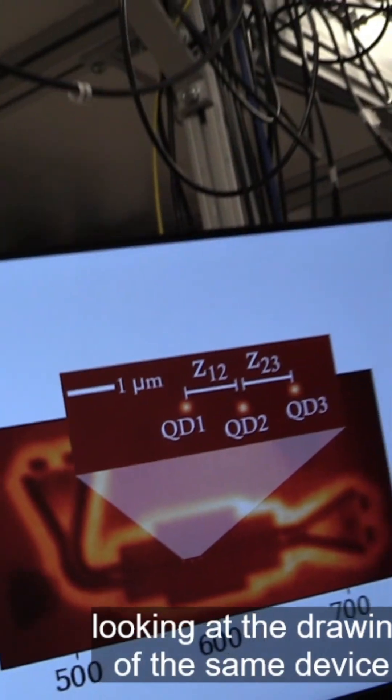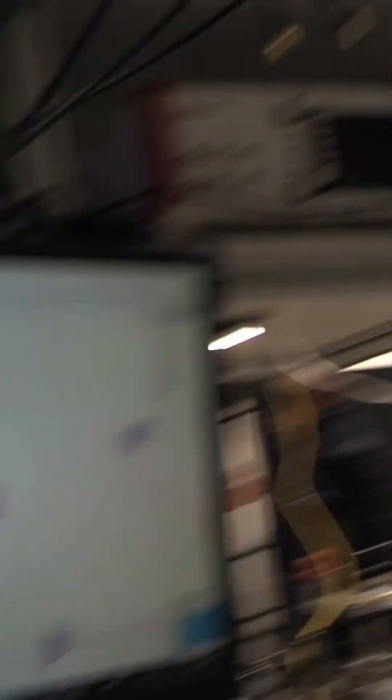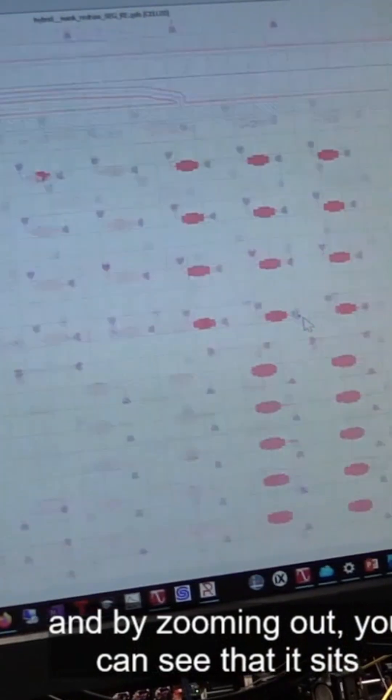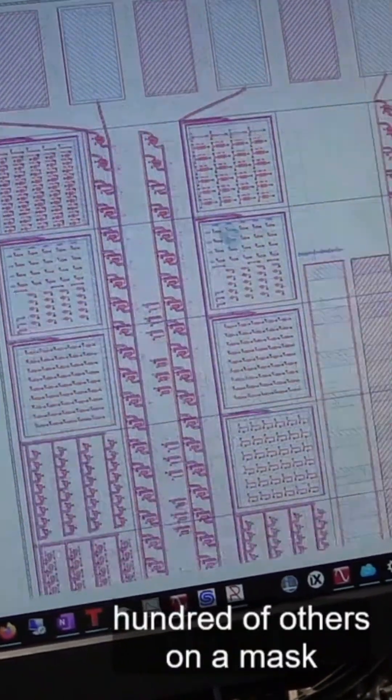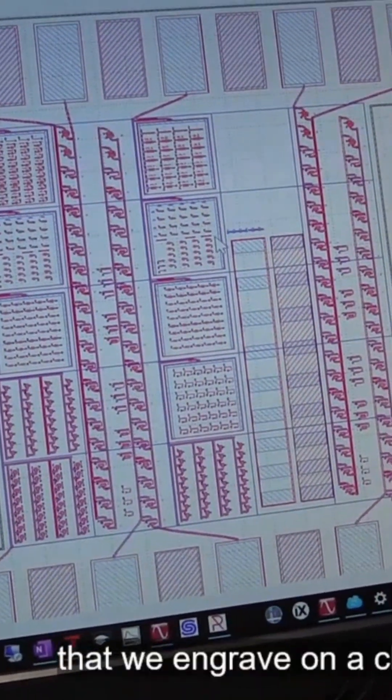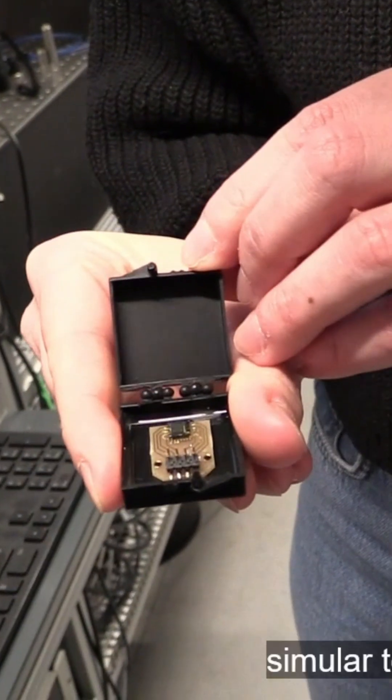Looking at the drawing of the same device and by zooming out, we can see that it sits between hundreds of others on a mask that we engrave on a chip that is of size 3 by 4 millimeters, similar to this one.